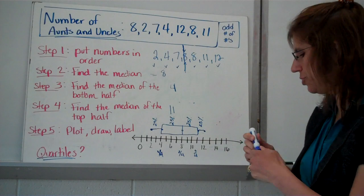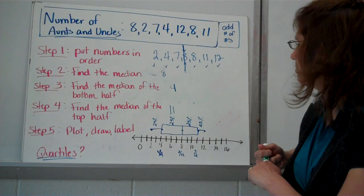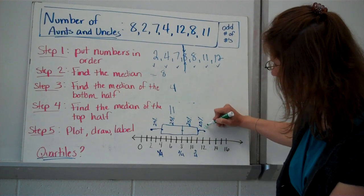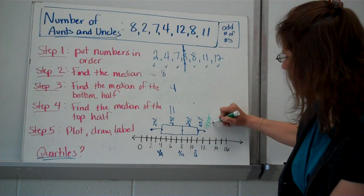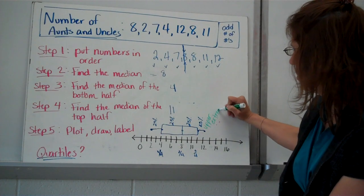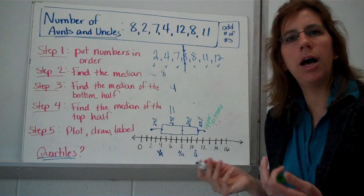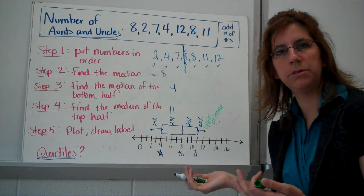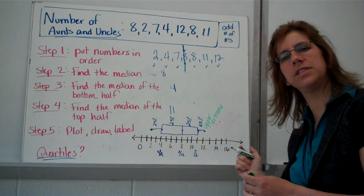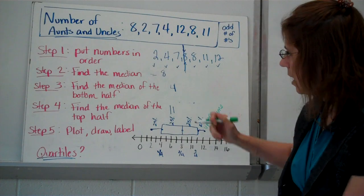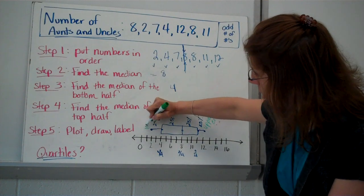Also, you should know the words lower extreme and upper extreme. This would be your upper extreme. Think about that. Upper is the highest value. Extreme. Farthest down in the set of data. And this would make this the lower extreme.